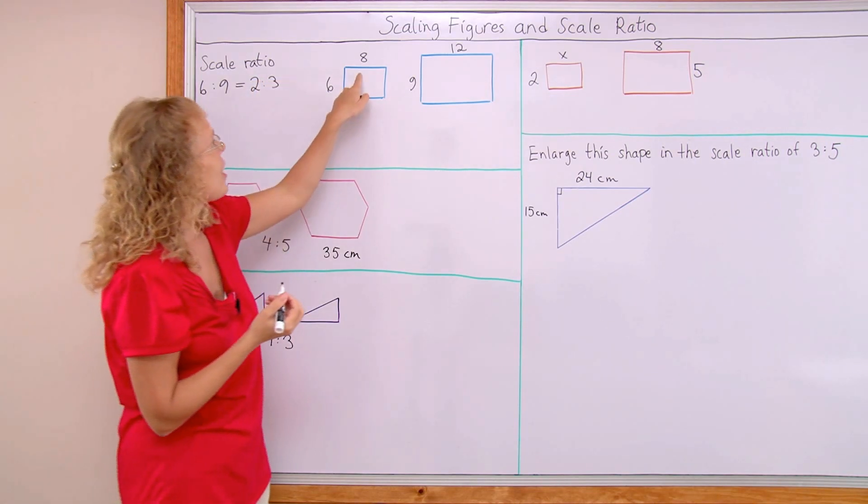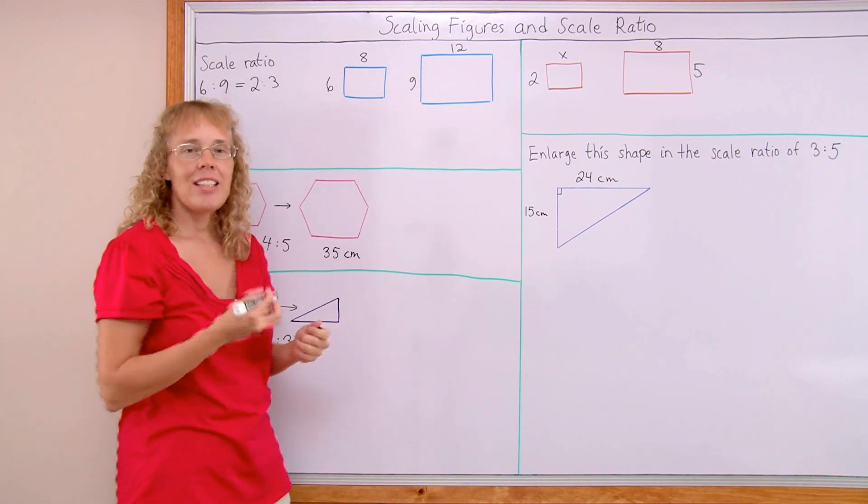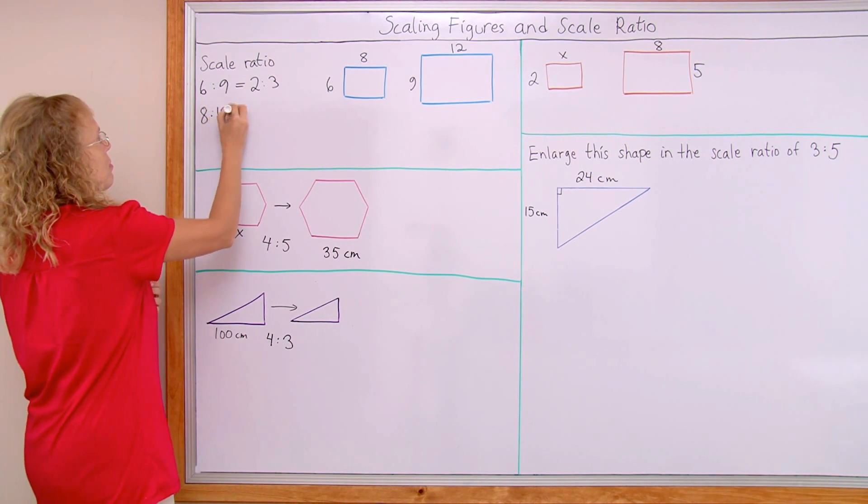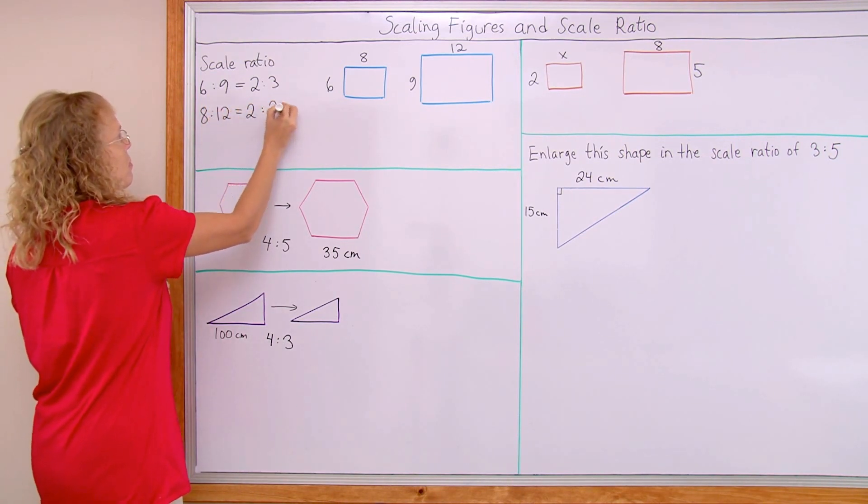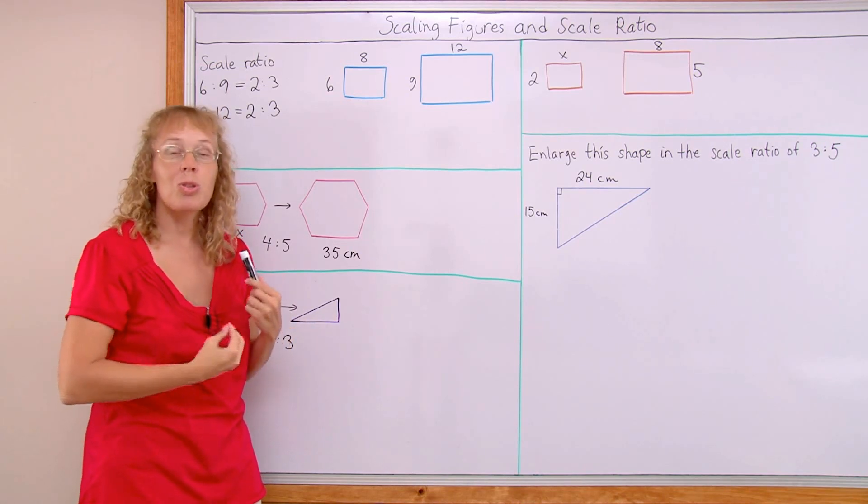I could also look at this side. It is 8 now and it becomes 12. 8 to 12 also gives me the scale ratio. So the scale ratio between these figures is 2 to 3.